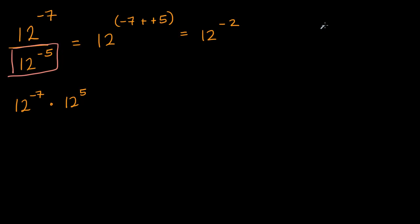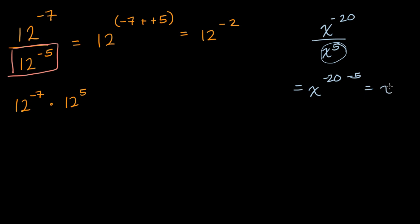Let's say I have x to the negative 20th power divided by x to the fifth power. Well, once again, we have the same base and we're taking a quotient, so this is going to be x to the negative 20 minus five, because we have x to the fifth in the denominator. So this is equal to x to the negative 25th power. And you could also view the original expression as x to the negative 20th times x to the negative five — dividing by x to the fifth is the same as multiplying by x to the negative five — so you just add the exponents and once again get x to the negative 25th power.